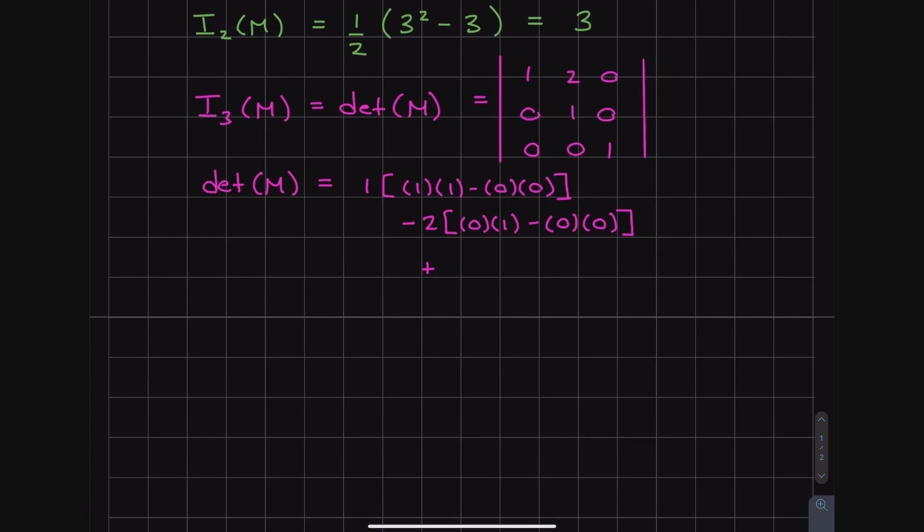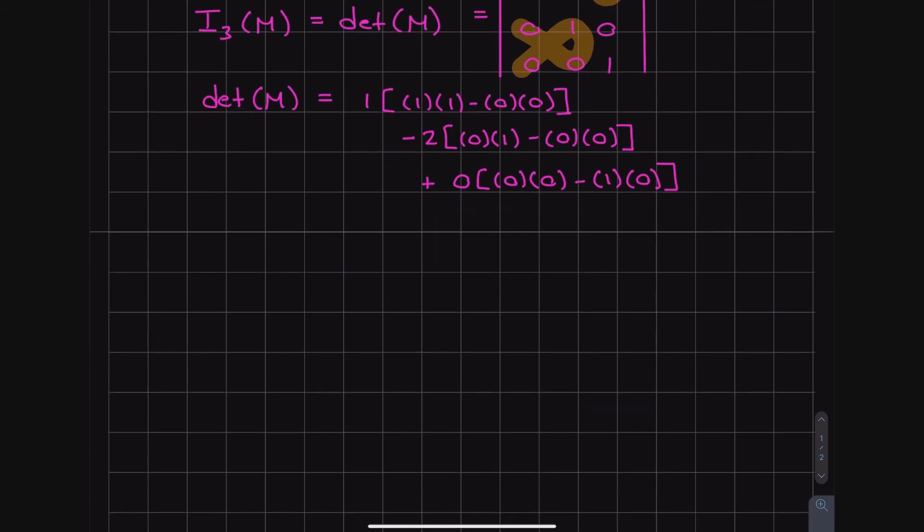So my coefficient this time is 2. So I go minus 2. And then in brackets, I do my little fish again. So 0 to 1 and then 0 to 0. So in this case, I got 0 times 1 and then minus 0 times 0. So we already know that this one is just going to be 0 in the end. And then I go to my third coefficient. So my third coefficient in this case is the 0. So plus 0. And if you want, you can realize that this is going to be equal to 0. So I don't really need to continue on, but I'll do the fish anyway.